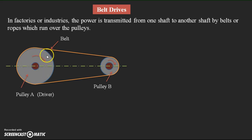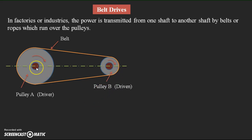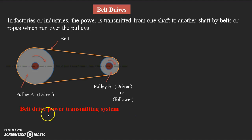When shaft one drives the pulley, pulley B also rotates by following the driver. Pulley B is therefore called the driven, or follower. It follows pulley A because pulley A initiates the rotation — that is the power transmission. Through the belt we transfer the power. This entire combination is the belt drive power transmission system, and this is how power is transmitted with the help of belts.